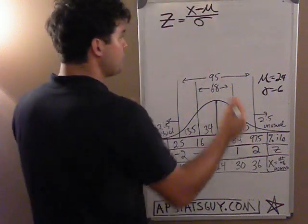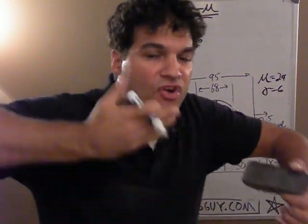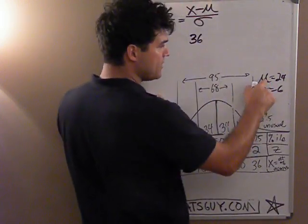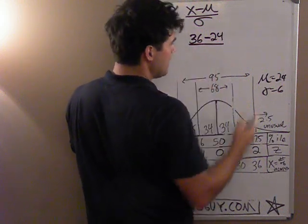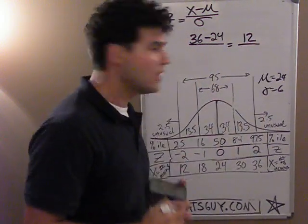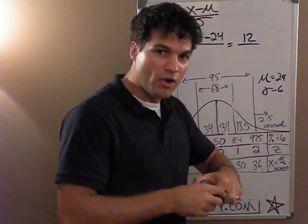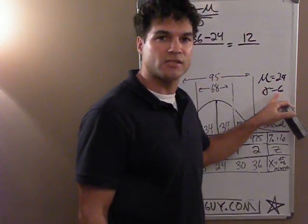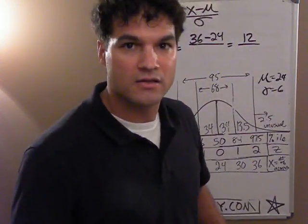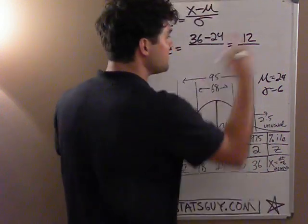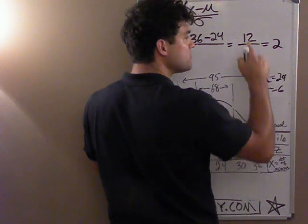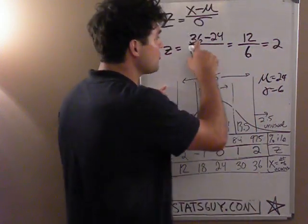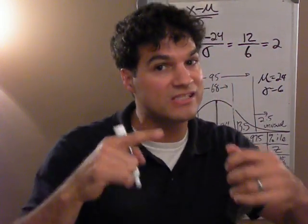Suppose I have a chipmunk that could fit 36 acorns in their mouth. What's their z-score? Let's find the distance in acorns away from the mean. The mean is 24, and 36 minus 24 is 12 acorns. But I don't want to know acorns — I want the z-score, meaning the number of standard deviations away from the mean. The standard deviation is 6. How do I find how many sixes 12 is? I divide by 6, and it tells me that 12 is two sixes away. So 36 is two standard deviations away from the mean, and the z-score is 2.